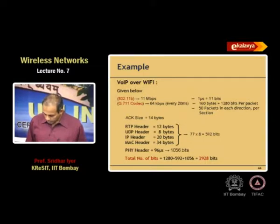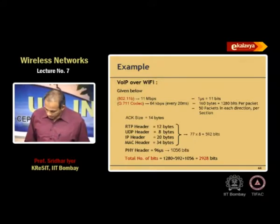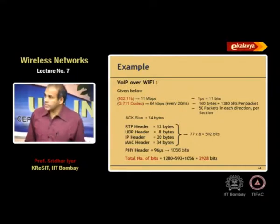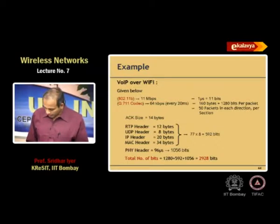I have found out the numbers for the various headers. RTP header is 12 bytes, UDP header is 8 bytes, IP header is 20 bytes, MAC header is 34 bytes. The PHY header is typically not calculated in bytes but in microseconds — for 11 Mbps it is 96 microseconds. The ACK size is 14 bytes.